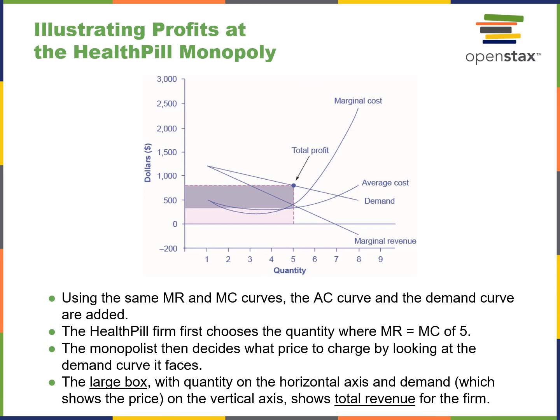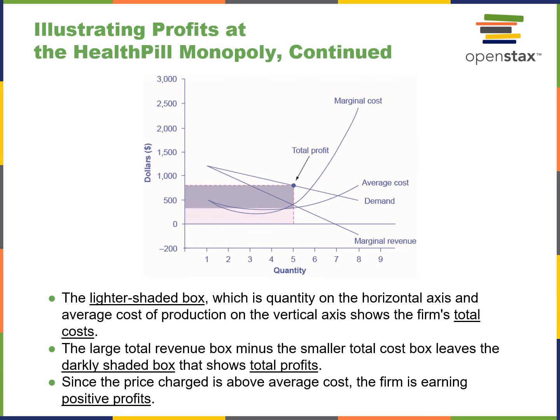Illustrating profits at the health pill monopoly: they first choose a quantity where MR equals MC — at five units. The dark purplish area represents total revenue for the firm, while the smaller, lighter-shaded box represents total cost. Subtracting the area of total cost from total revenue shows total profits. Since the price charged is above average cost, the firm is indeed earning positive profits.